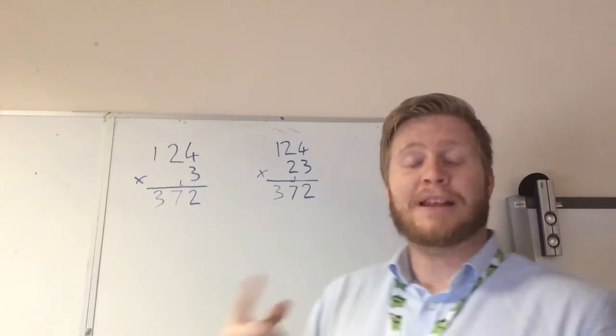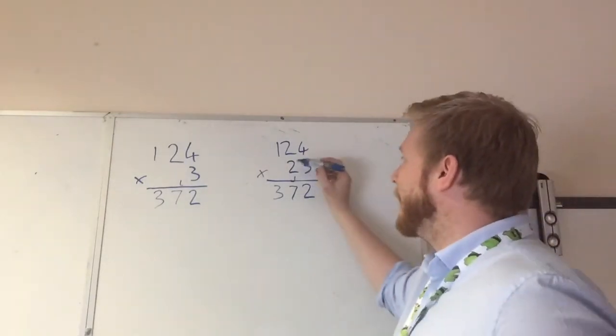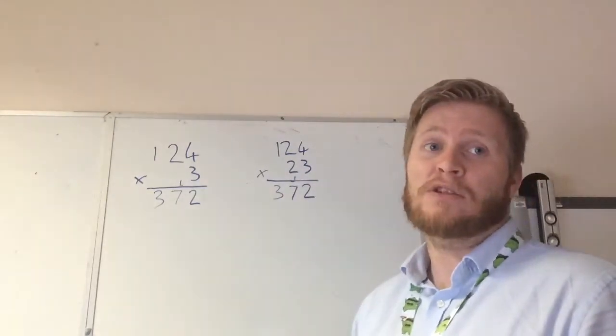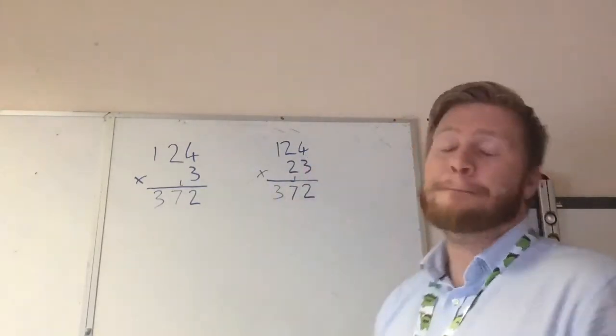So next, this is where we do something a little bit different. We have to times by this as well. Now remember, this isn't 2. This is actually two 10s, which means we need to times this number by 20.